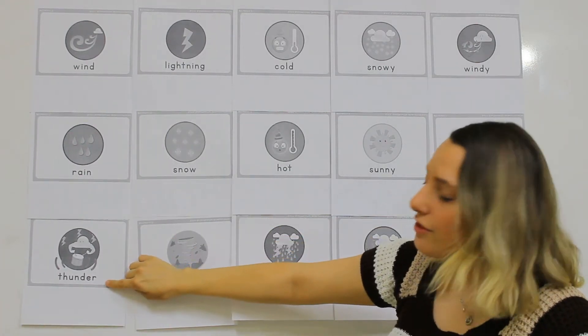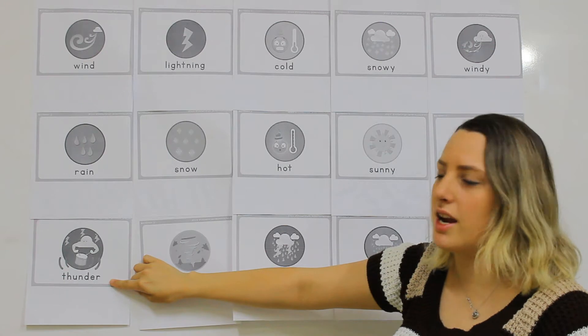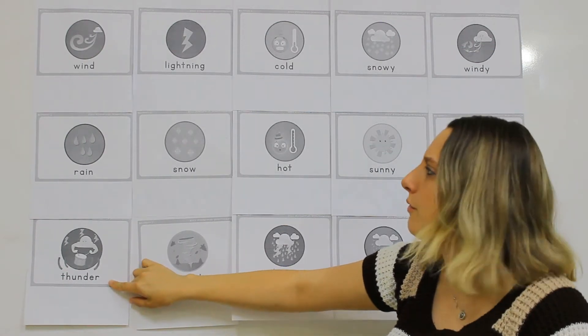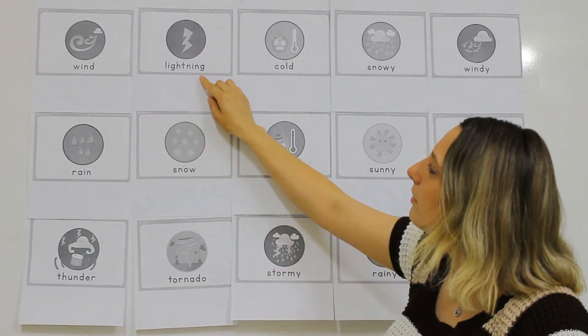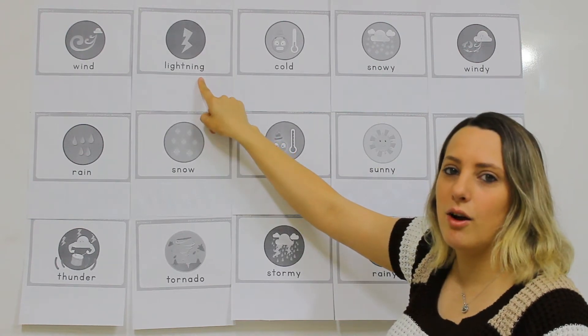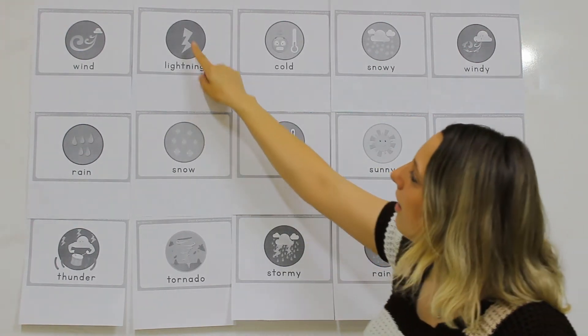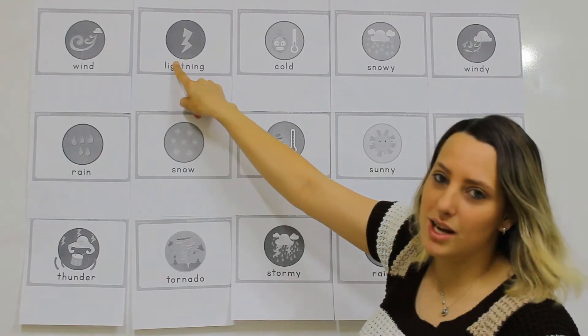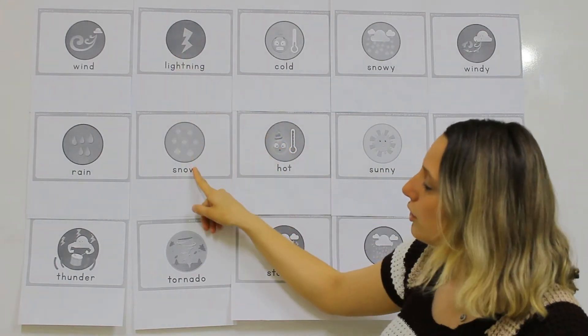Rain, thunder, when we have big claps, big loud bangs of thunder. Lightning, when we see bits of light come down from the sky.